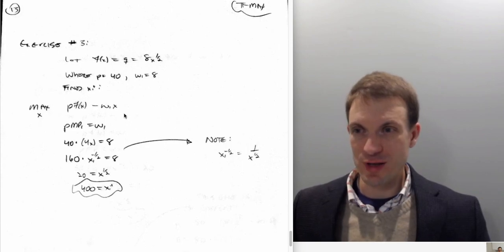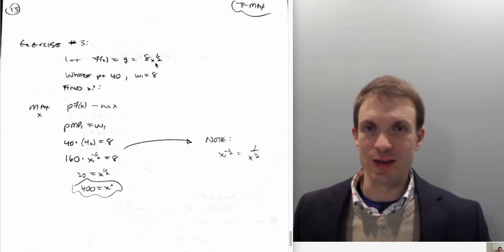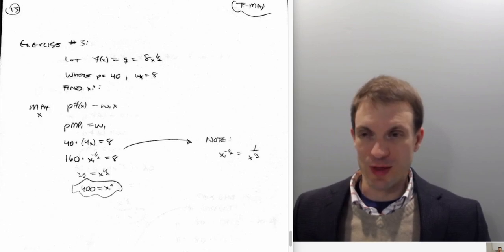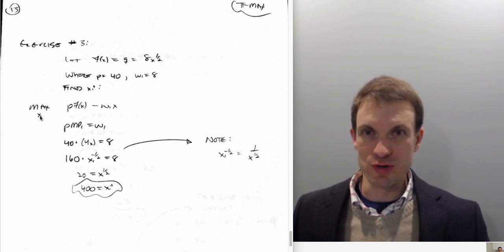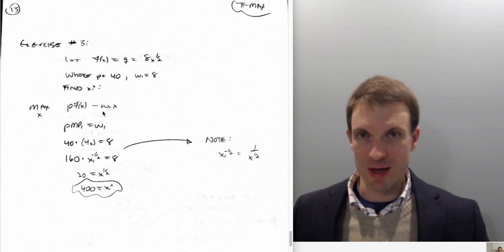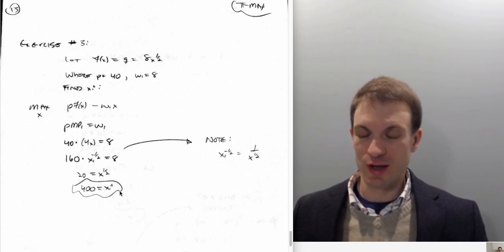Exercise 3: suppose my production technology is f(x) = 8x to the one-half. My output price is 40 and the price of input 1 is 8. Find x1. I maximize profit by choosing my use of input x: price times f(x) minus omega 1 times x. The first-order condition is P times MP1 equals omega 1. Substituting in the values and solving for x gives x1 star equals 400.